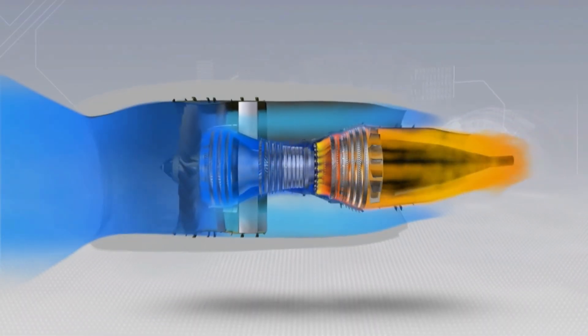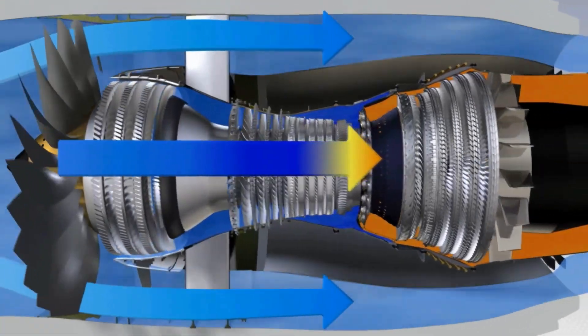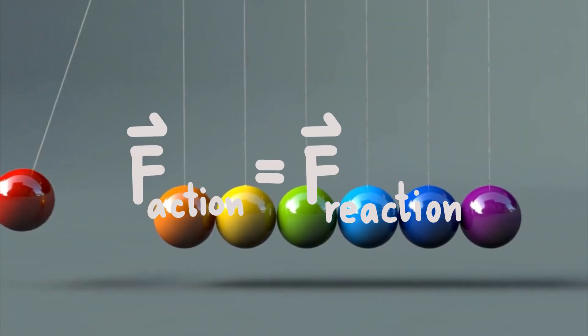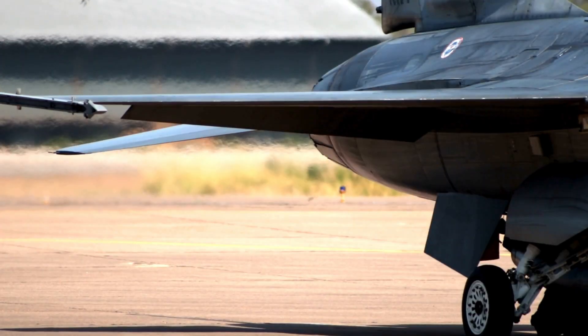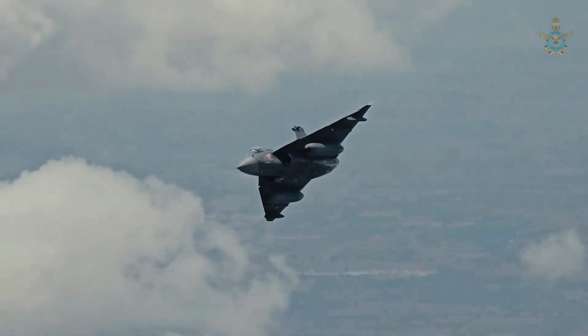Finally, the gases exit through the exhaust nozzle, accelerating out of the back of the engine at blistering speeds. And thanks to Newton's third law, that explosive exit creates the forward thrust that launches a fighter jet through the sky.